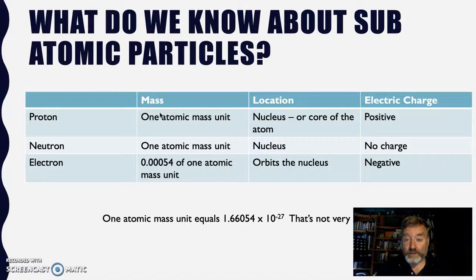We put twenty seven zeros on the end and move that decimal point twenty seven places to the right. So we're talking about a really small number of a kilogram. Electrons weigh 0.00054 of an atomic mass unit. So they weigh not very much of something that doesn't weigh very much.